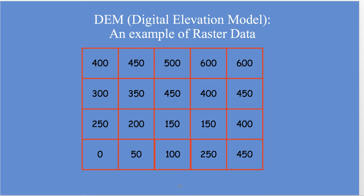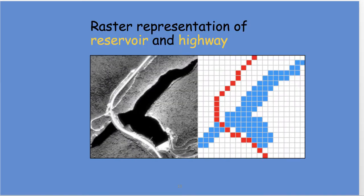With a DEM you can start doing analysis — for example, water flows from high to low, so you'd expect water to flow downhill, with tributaries coming in. Here's a ridge, so it would go this way. You can actually derive stream networks from this elevation model. There's a lot of analysis you can do with these raster images.